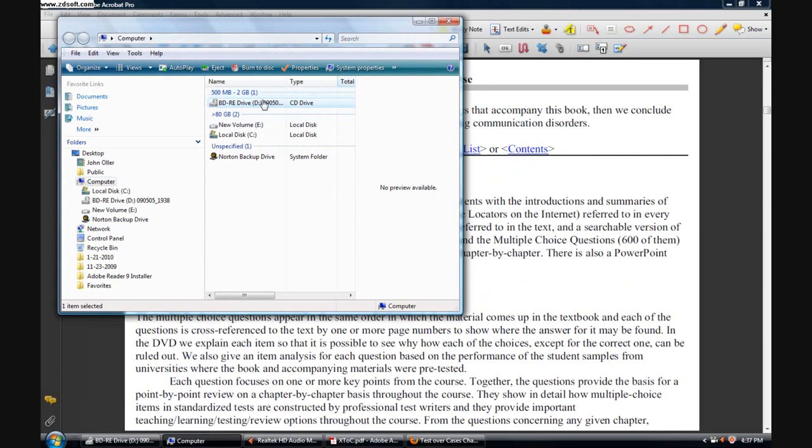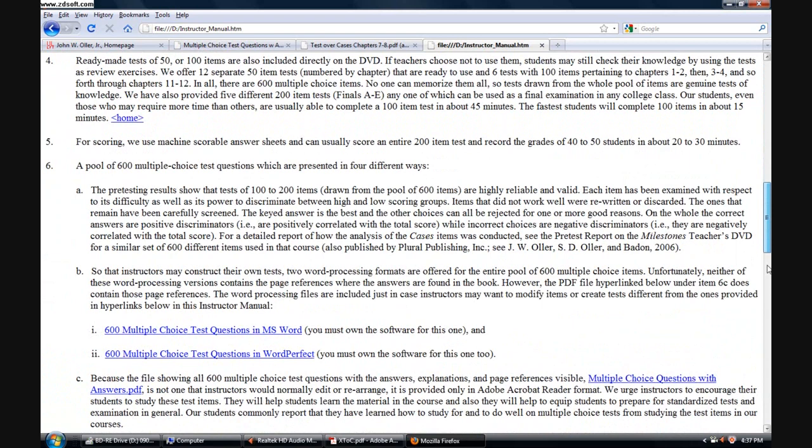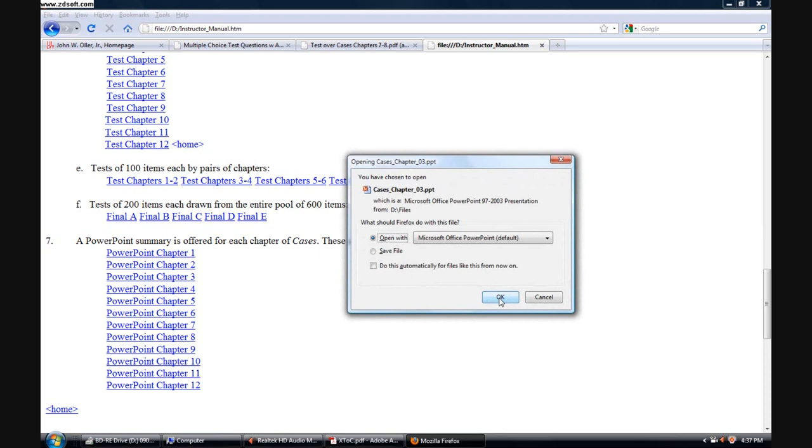Returning to the Explorer, and then back to our Index file, and in particular, I want to go back to the Instructor Manual. We've looked at tests. We have 200 item final tests that are random selections of 200 items from each of the 600 items, and they're uniformly spread over all 12 of the chapters. We also have addition PowerPoints for each chapter.